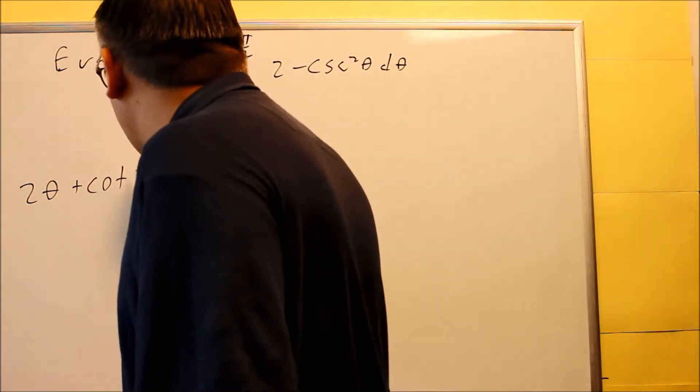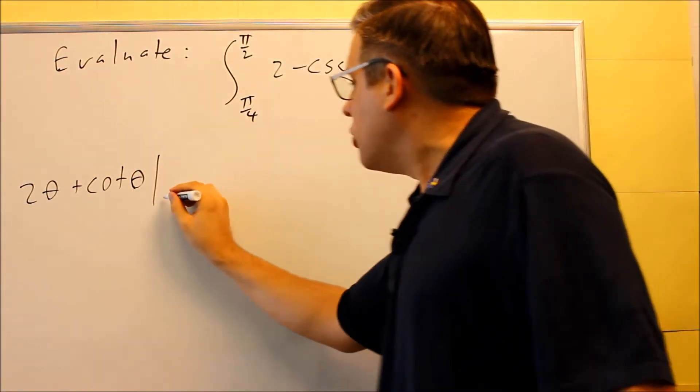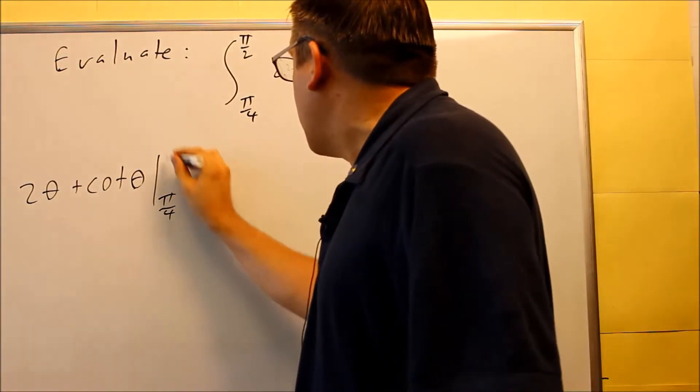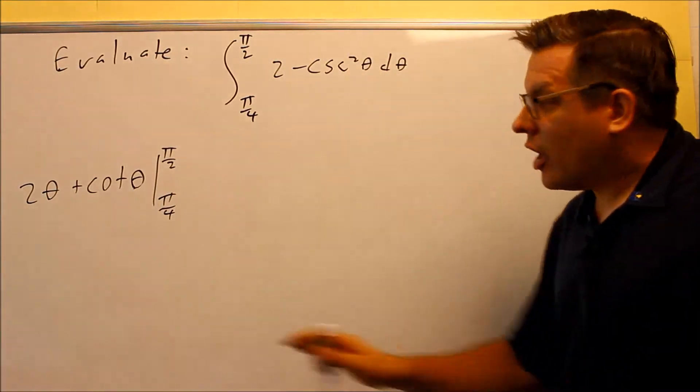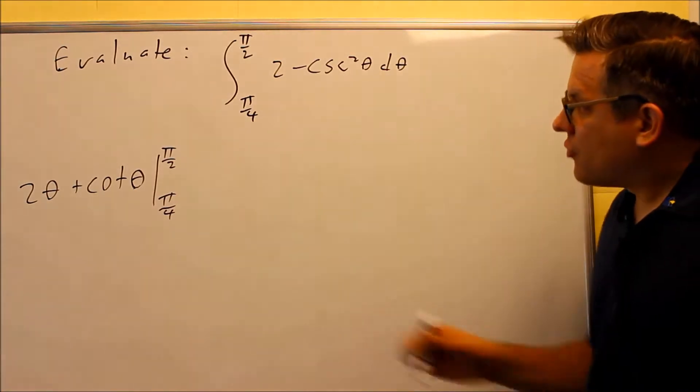Okay, not squared, just regular cotangent, and we're using θ on that for a variable. We're doing this between π over 4 and π over 2. So now we've got our antiderivative. We're now ready to put in our numbers from the interval.